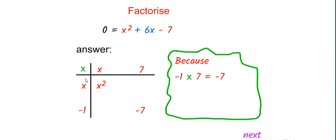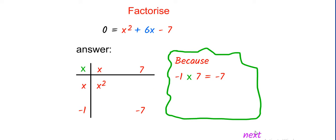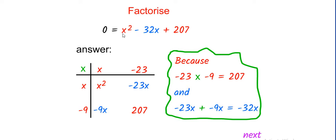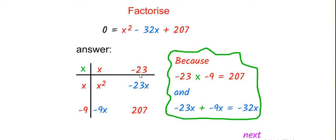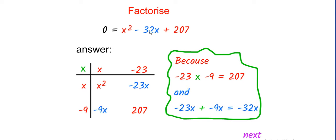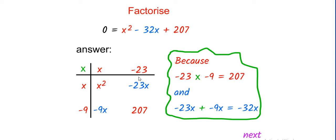Next, we have x squared minus 32x plus 207. The factorization process: x times x gives x squared. 207 is a product of 23 times 9. Because the middle term is minus 32x, we put minus signs, since minus 9x plus minus 23x equals minus 32x.